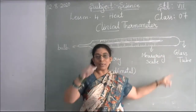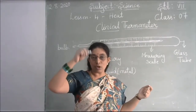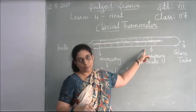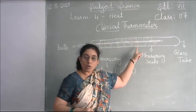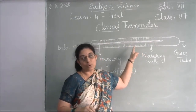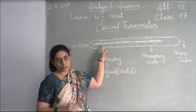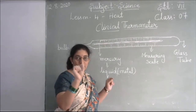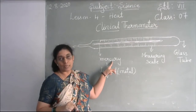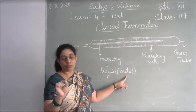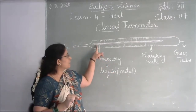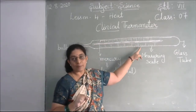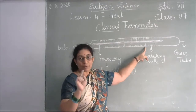On the glass tube there is a measuring scale that tells you how hot or cold your body is. Inside the glass tube there is a thin, shining silver liquid called mercury. Mercury is the only liquid metal available. The mercury rises according to your body temperature, and where it stops indicates your temperature. The part that helps the mercury rise is called the bulb.